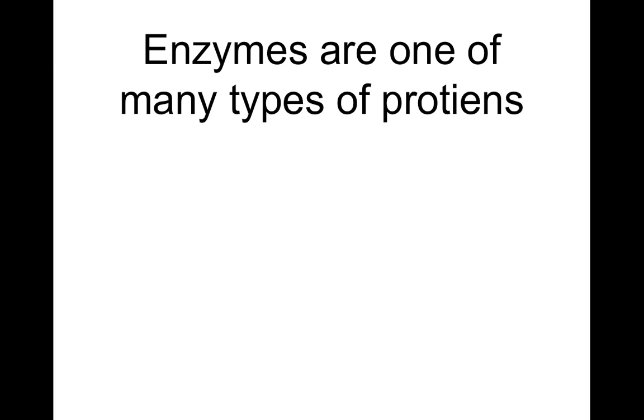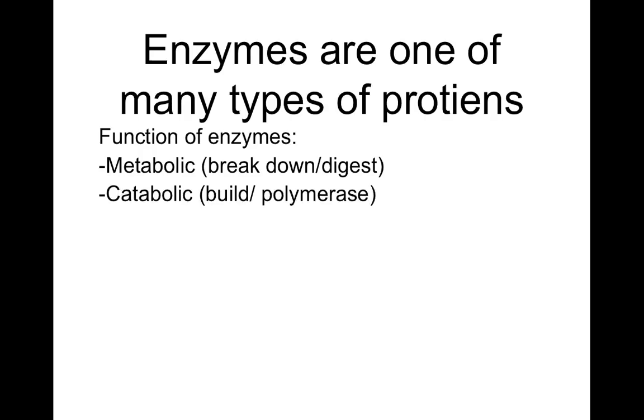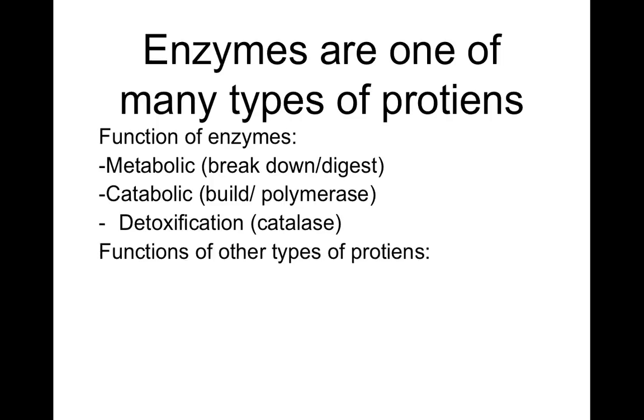Alright, but before we do that, enzymes are one of many types of proteins. This isn't in your notes or anything, but just to keep in mind, enzymes have a bunch of different functions. First of all, you have some enzymes in your digestive system that help break down and digest things. We call those metabolic enzymes. You have catabolic enzymes. Those things are going to build, like DNA polymerase, for instance, RNA polymerase. And then we've got things for detoxification, catalase, like you worked with in lab on Friday. And the catalase is going to help break down intruders and that sort of thing.